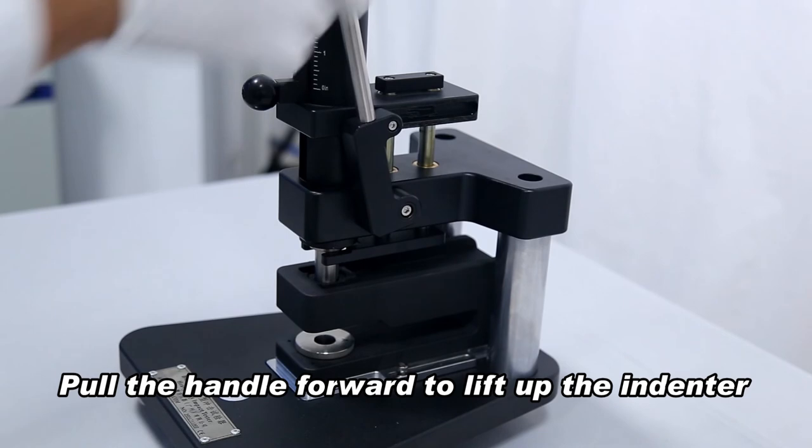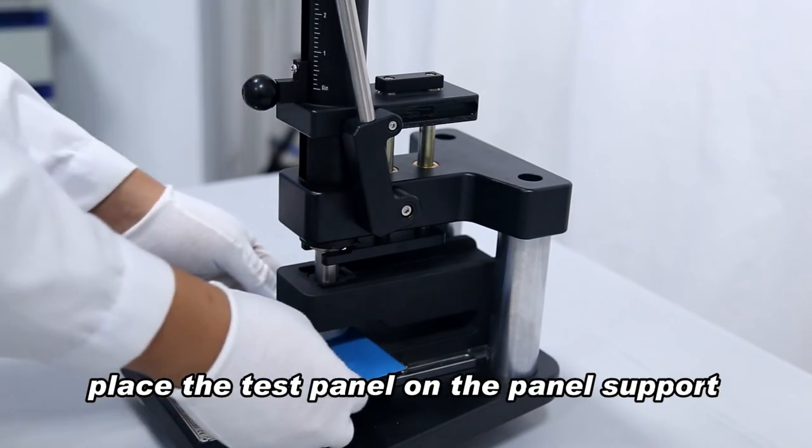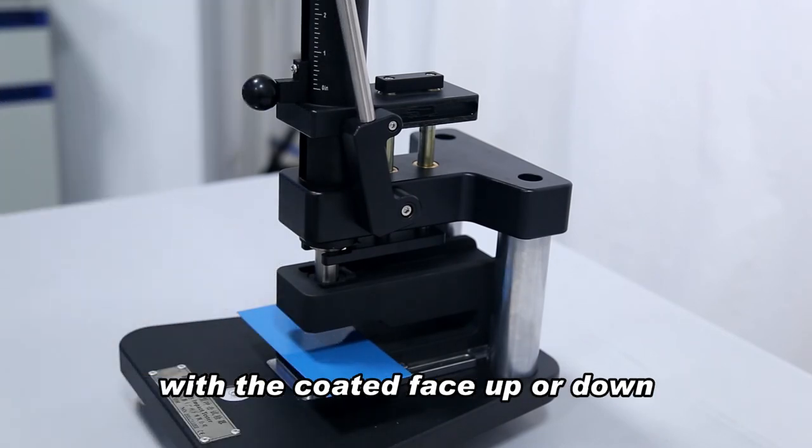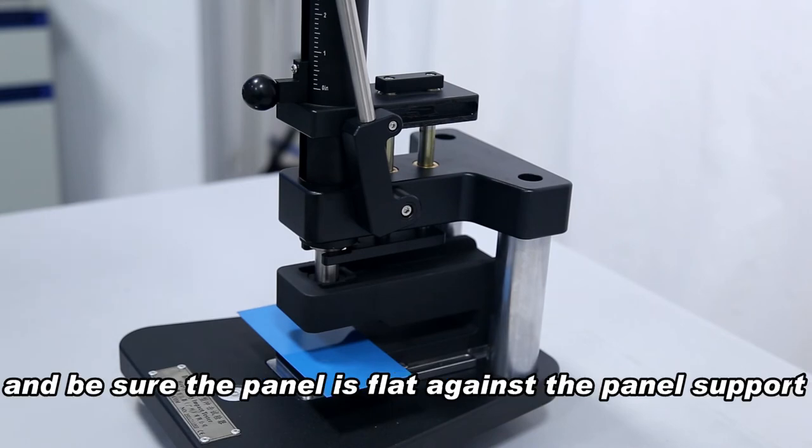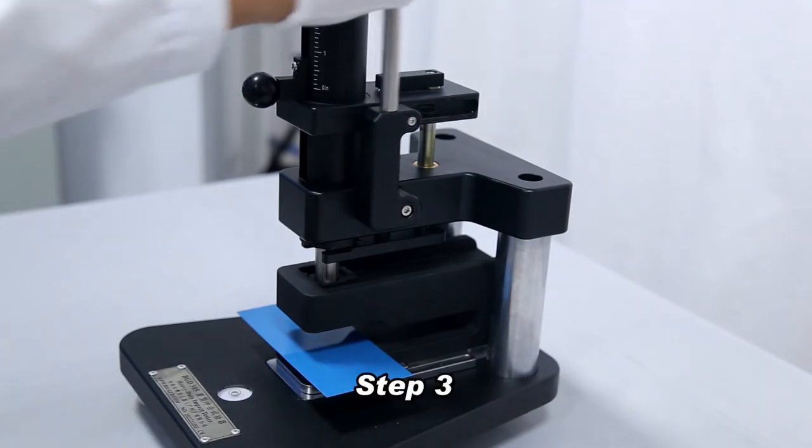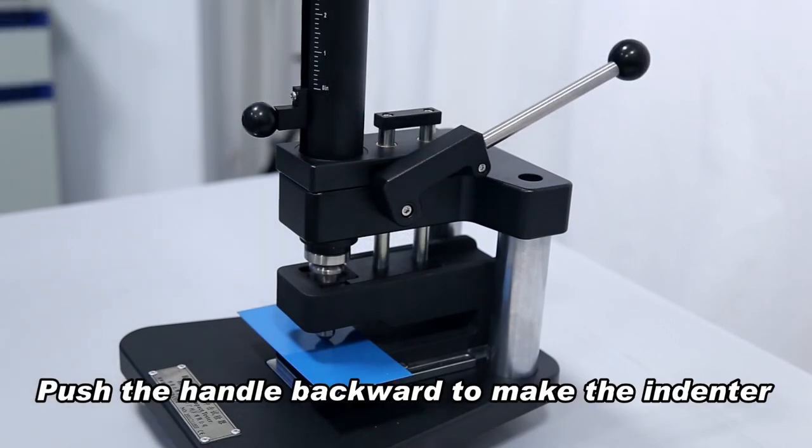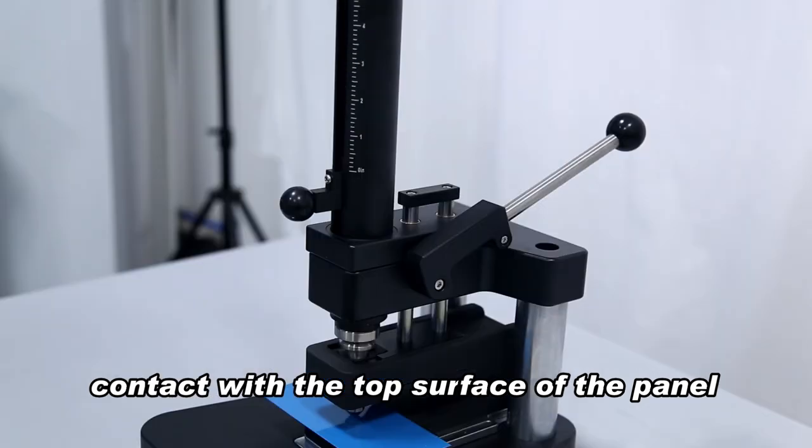Pull the handle forward to lift up the indenter. Place the test panel on the panel support with the coated face up or down, and be sure the panel is flat against the panel support. Push the handle backward to make the indenter contact with the top surface of the panel.